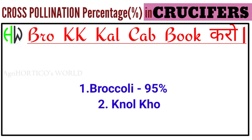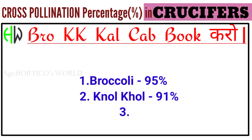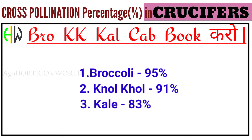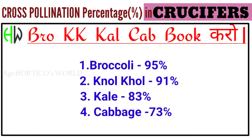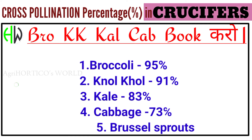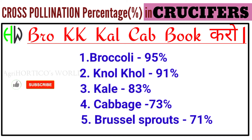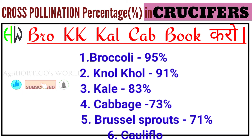'Kal' stands for kale, which is 83 percent. 'Cab' stands for cabbage at 73 percent. 'Buk' stands for Brussels sprouts at 71 percent. And the last part, 'Karlo,' stands for cauliflower at 70 percent.